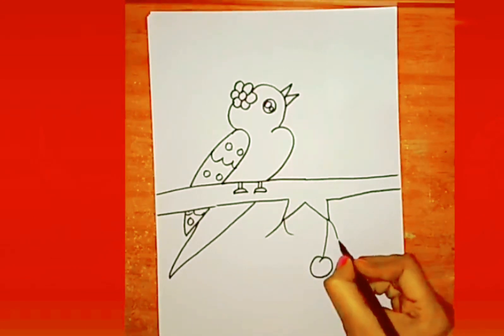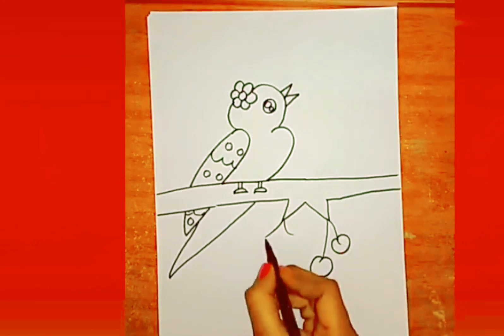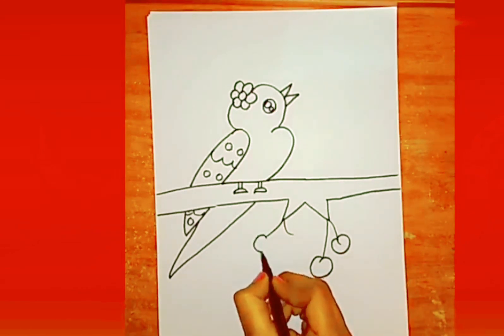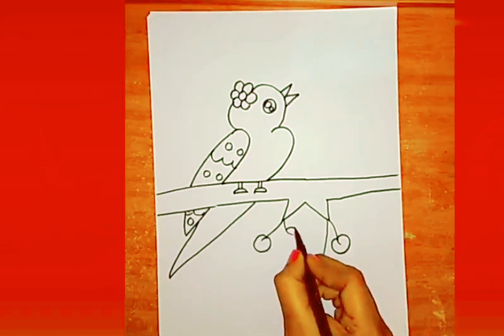Now let me draw some fruits and leaves on the branches. Here I draw cherries and some leaves.